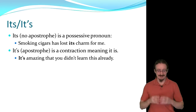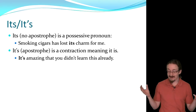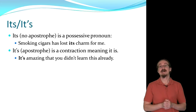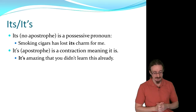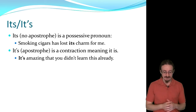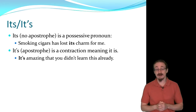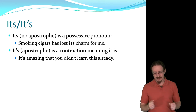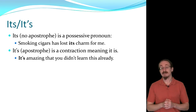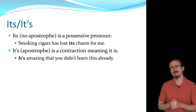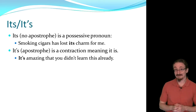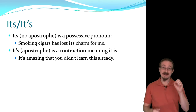Finally, its versus it's. ITS without an apostrophe means possessive. IT'S with an apostrophe means it is or it has. 'Smoking cigars has lost its charm for me' — possessive. 'It's amazing that you didn't learn this already' — it is. 'What a strange trip it's been' — it has. So if you have no apostrophe, that's the possessive pronoun form; if you have the apostrophe, it's a contraction.